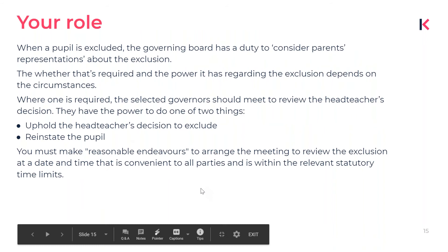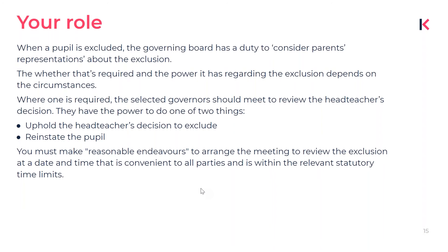When a pupil is excluded, the governing board has a duty to consider the reinstatement of the pupil. On a practical level, that means the governing board has the power to either uphold the headteacher's decision or choose to reinstate the pupil — meaning permit the pupil to return to school. You also have a duty to consider parents' representations about the exclusion, meaning you have to hear the parents out on why they think the exclusion was wrongful.